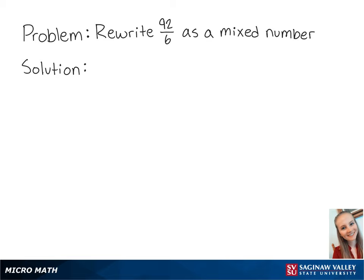For this problem, we're going to rewrite 92 sixths as a mixed number. We can use long division to see how many times 6 goes into 92.